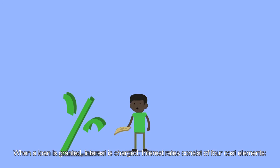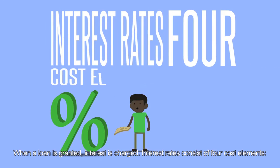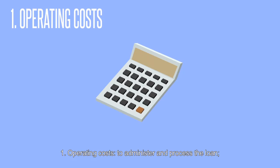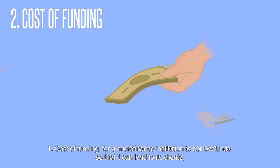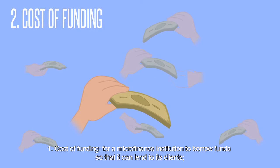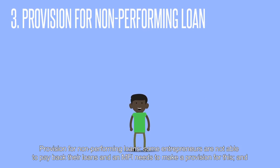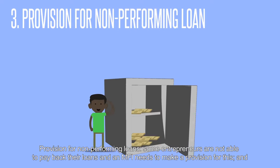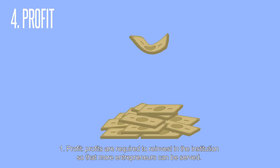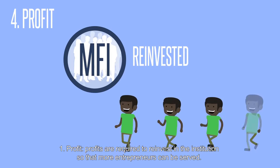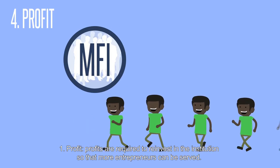When a loan is granted, interest is charged. Interest rates consist of four cost elements: operating costs, to administer and process the loan; cost of funding, for a microfinance institution to borrow funds so that it can lend to its clients; provision of non-performing loans, as some entrepreneurs are not able to pay back their loans and an MFI needs to make a provision for this; and profit, which is required to be reinvested in the institution so that more entrepreneurs can be served.